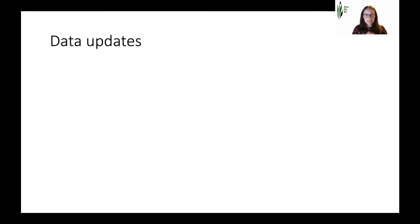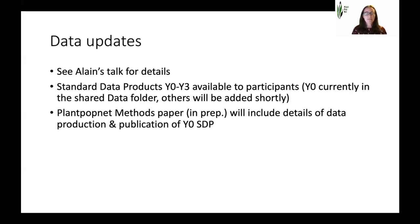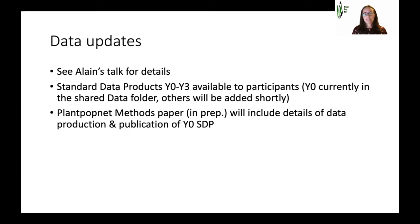On data updates — Alan's talk will give you lots of detail — but broadly we have now produced standard data products from Year Zero to Year Three, available to participants within the network, not publicly available yet. The Year Zero data is currently in the shared data folder and others will be added shortly. It's very important that we keep these data products within the network, as there are people working on papers and PhD students who rely on this data. Please don't share them — they're for us only.